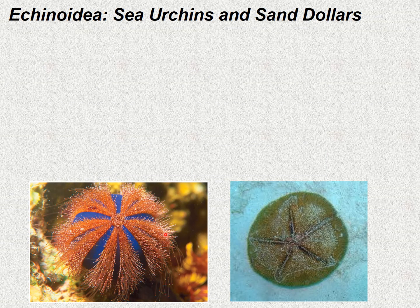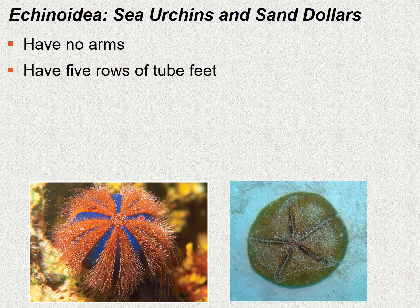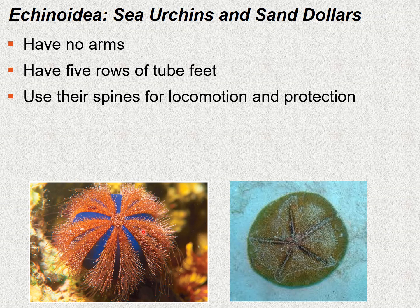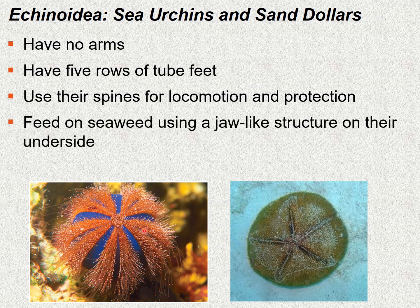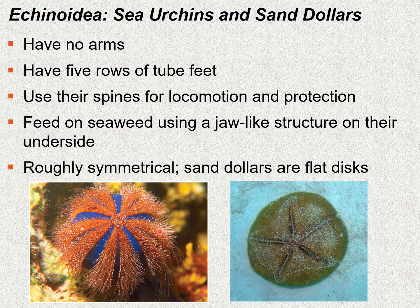Echinoidea include the sea urchins and sand dollars. These appear to have radial symmetry, however they are also bilaterians. Both have no arms and have five rows of two feet. They use their spines for locomotion and protection. Sea urchins appear more spherical with sometimes very long spines, while sand dollars are more flat. They generally feed on seaweed using a jaw-like structure on their underside. They appear to have radial symmetry but are bilaterians, and sand dollars are more flattened.